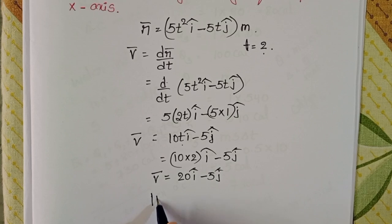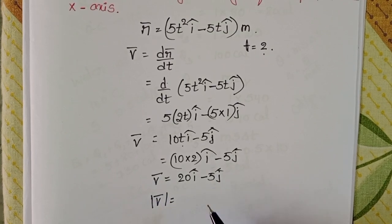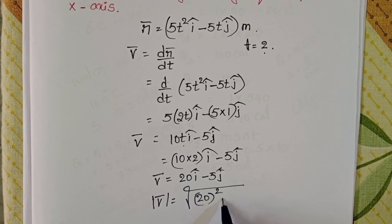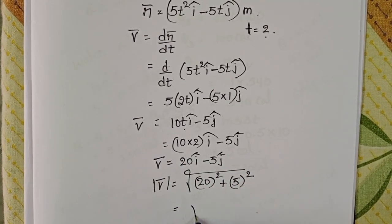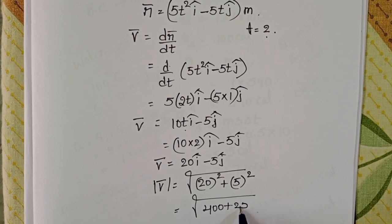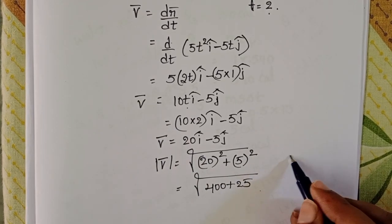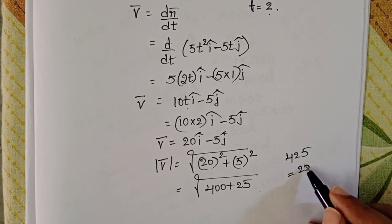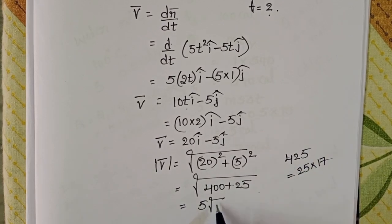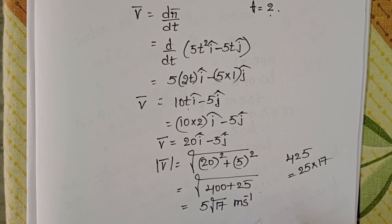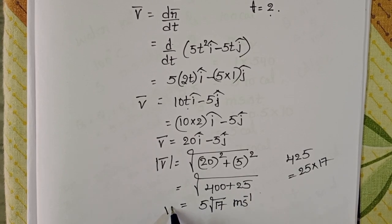Finding the magnitude of the velocity: mod v bar equals square root of (20² plus 5²), which is square root of (400 plus 25), equals square root of 425, equals square root of (25 into 17), giving 5 root 17 meters per second. This is the magnitude of the velocity.